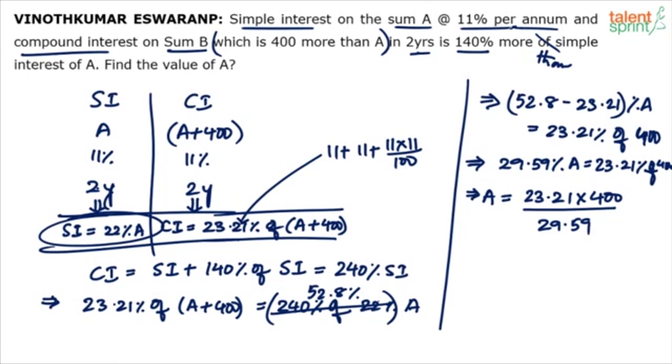I mean I think the calculation is little tedious. Otherwise the question is straight. You just have to write the right equation. Write the correct equation in terms of CI and SI. 23.21 into 400 upon 29.59.